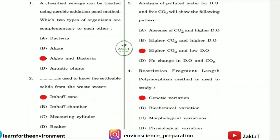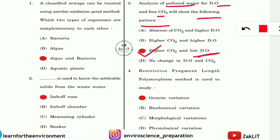Question 3: Analysis of polluted water for dissolved oxygen and free carbon dioxide will show the following pattern. We will get higher carbon dioxide levels and low dissolved oxygen, because all the oxygen is consumed by organisms and carbon dioxide is elevated in polluted water.